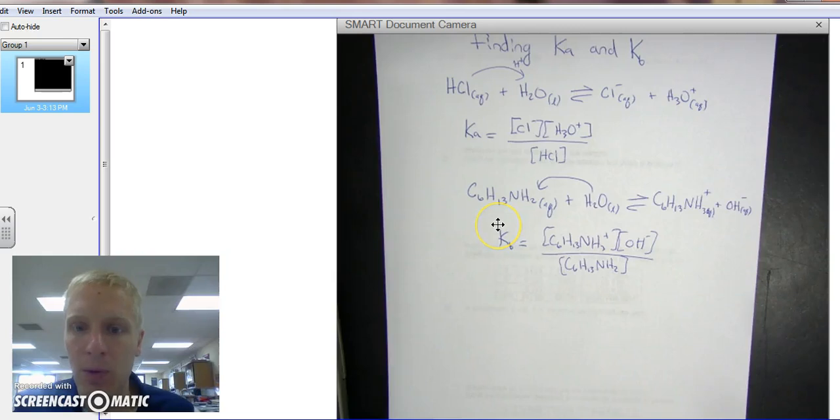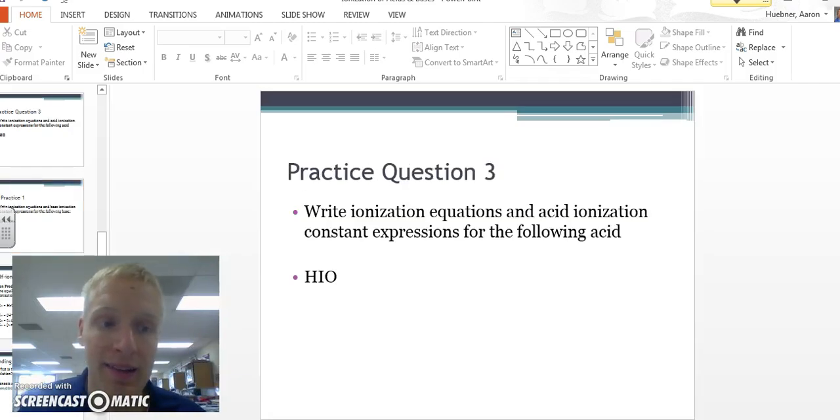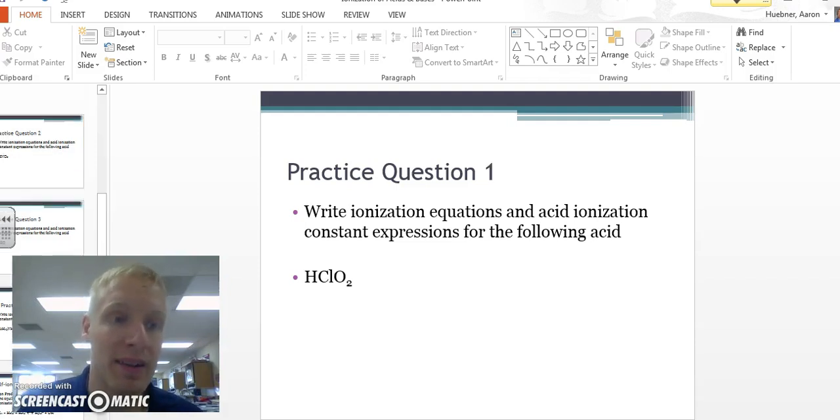So when we get a value for Ka, what does it mean? If we have a small Ka or Kb, it means we have a weak acid or base. If we have a high Ka or Kb, then the acid or base is stronger.